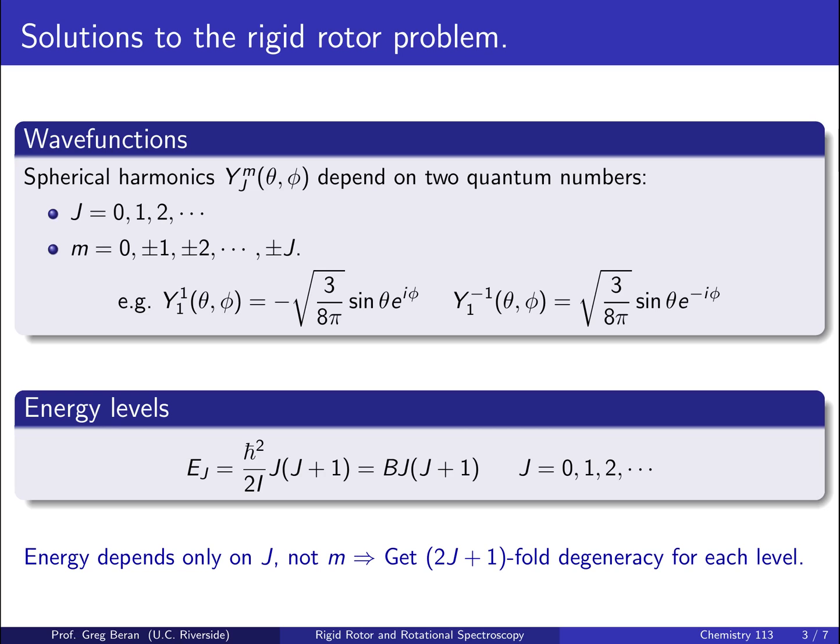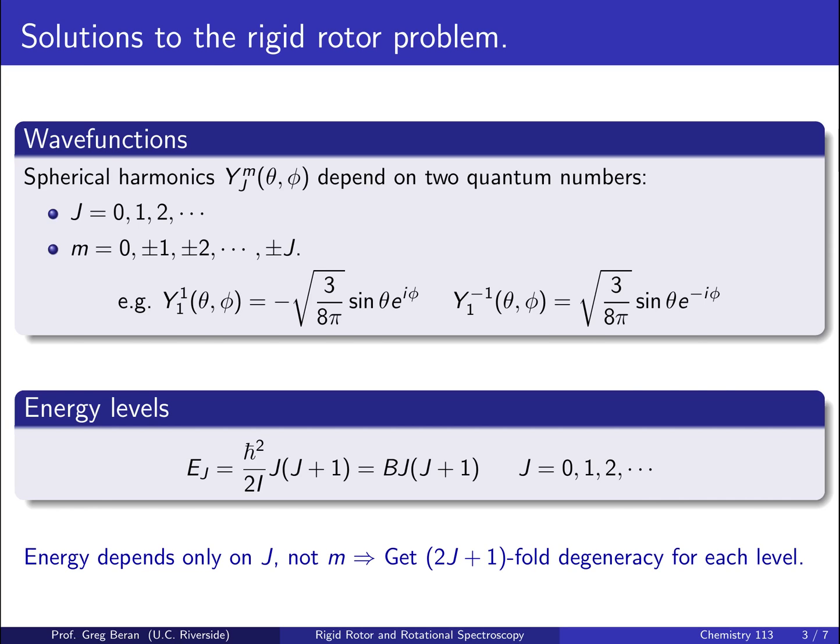In fact, we get a lot of degeneracies in the rigid rotor system. Each state, j, has 2J plus 1 fold degeneracy.